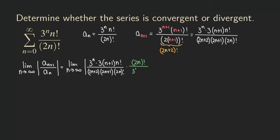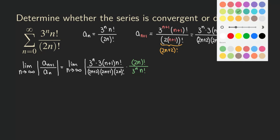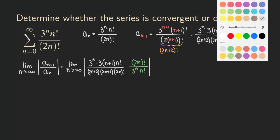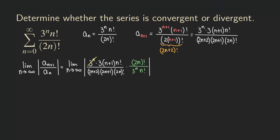Multiplying by the reciprocal of a_n brings (2n)! into the numerator and 3^n times n factorial into the denominator. Now we do a lot of canceling: 3^n cancels, n factorial cancels, and (2n)! cancels.